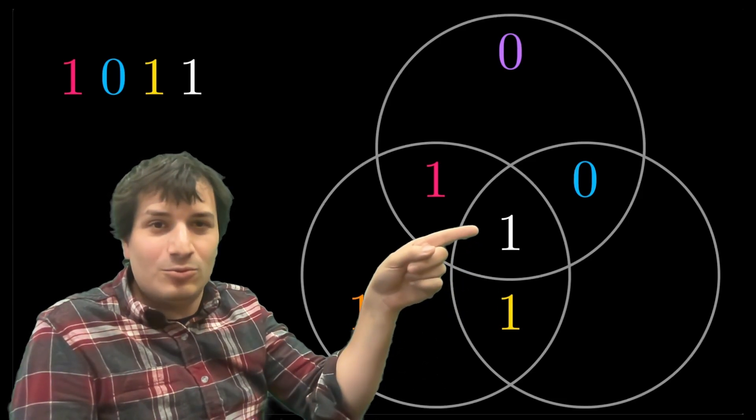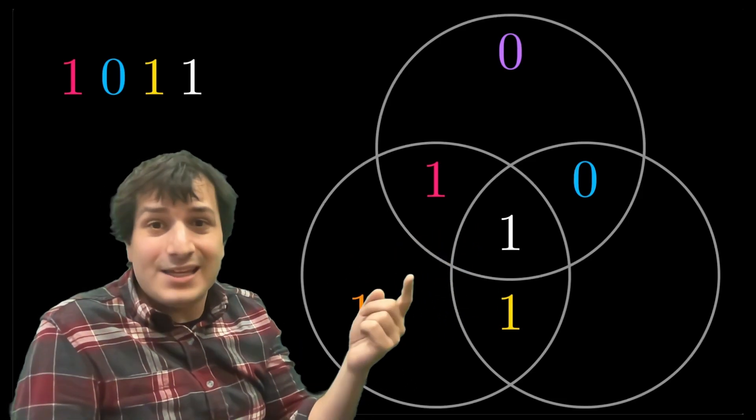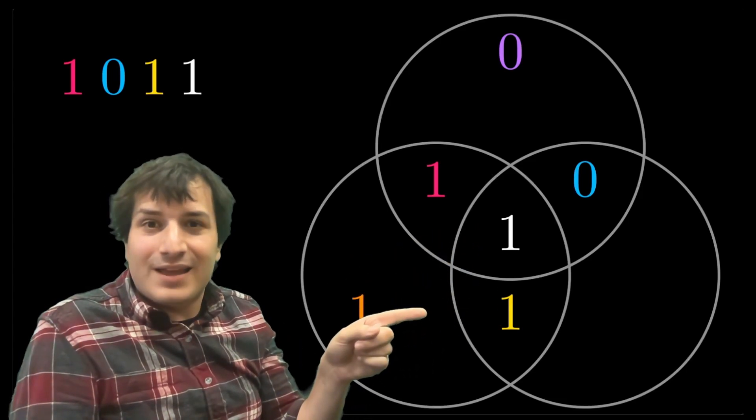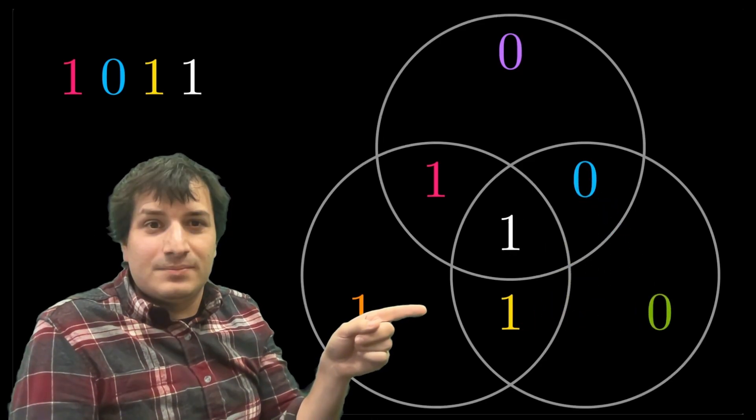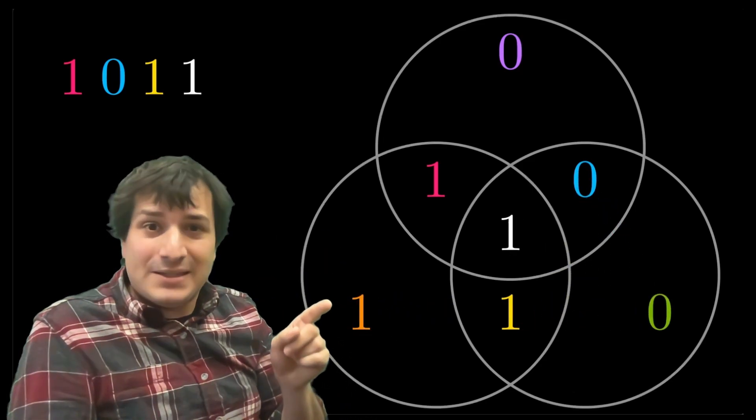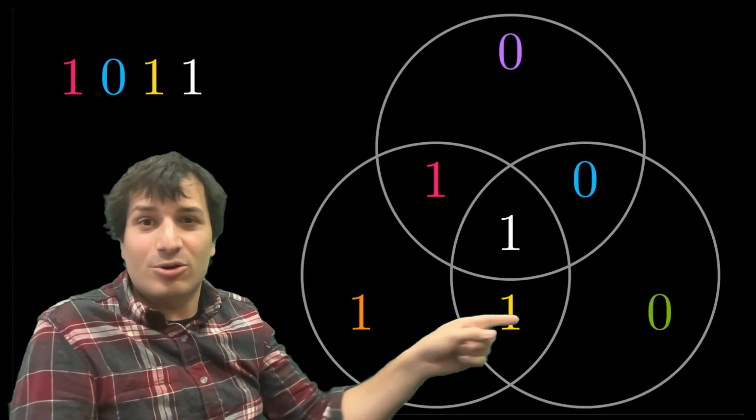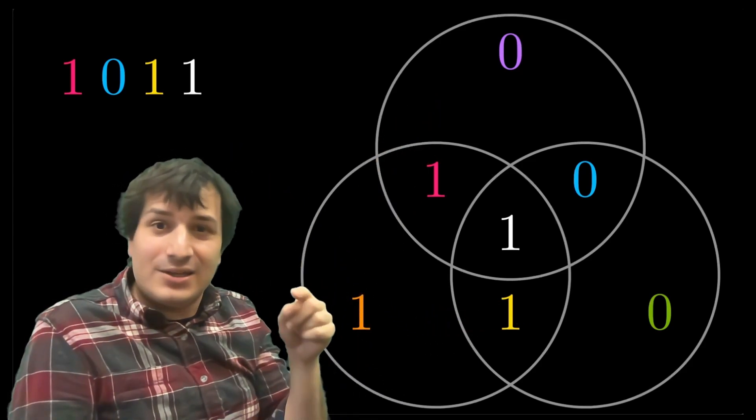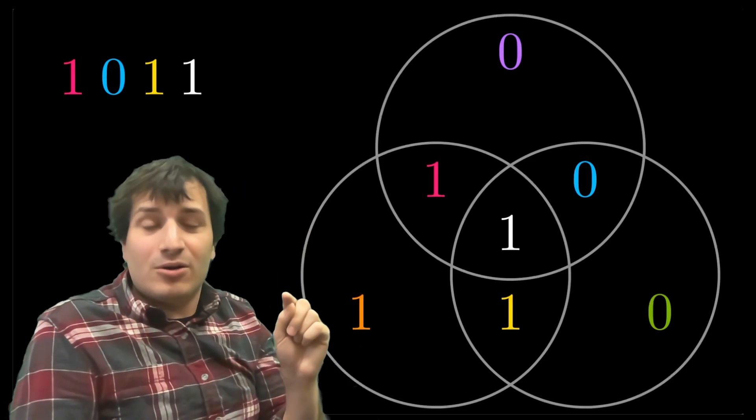Well, there's again, there's two ones. One plus one is two is already even. So you just need to put a zero in that last circle. So now we have our three extra bits, zero up there, one down here and zero over there. We're going to add these to the message and transmit them along with one zero one one.